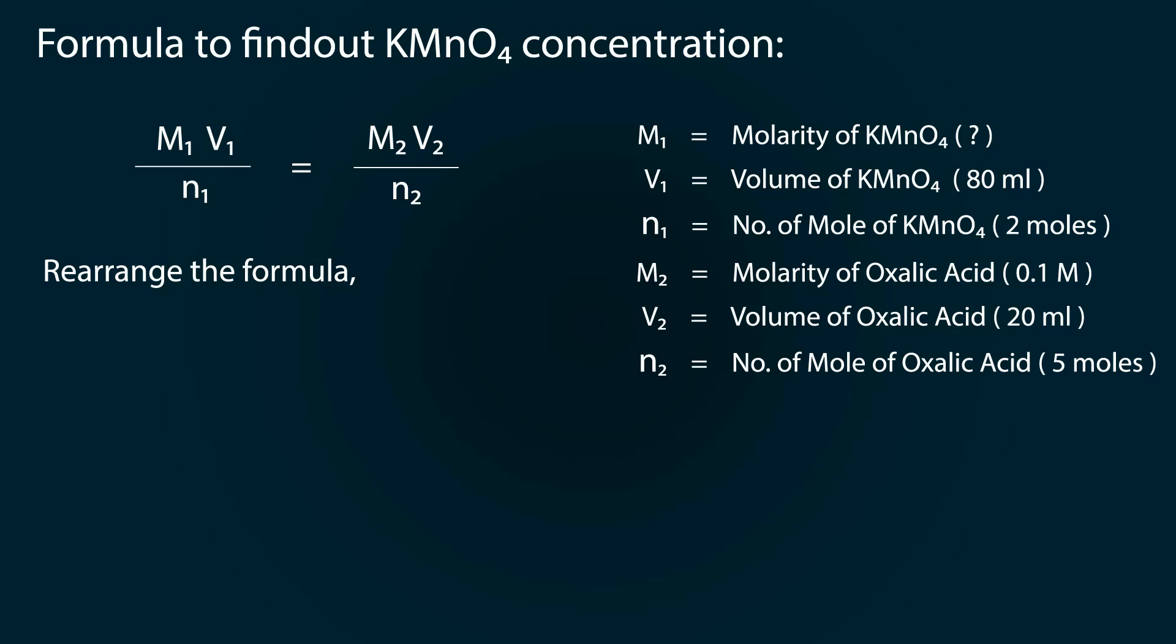Now rearrange the formula. M1 is equal to N1 by N2 multiply M2 V2 divided by V1. By putting values we get our molarity as 0.01 molar. For more informative videos, please like and subscribe our channel.